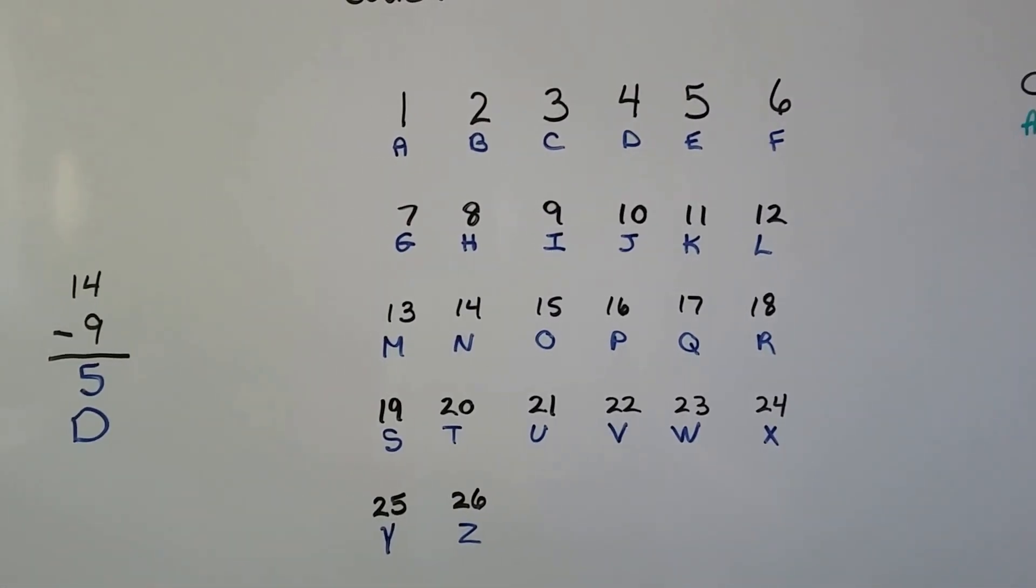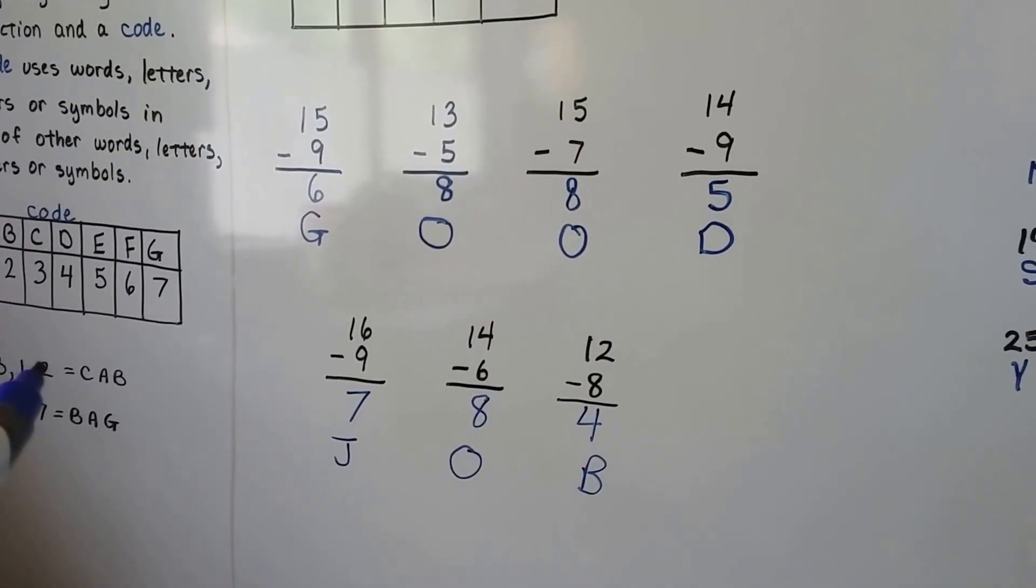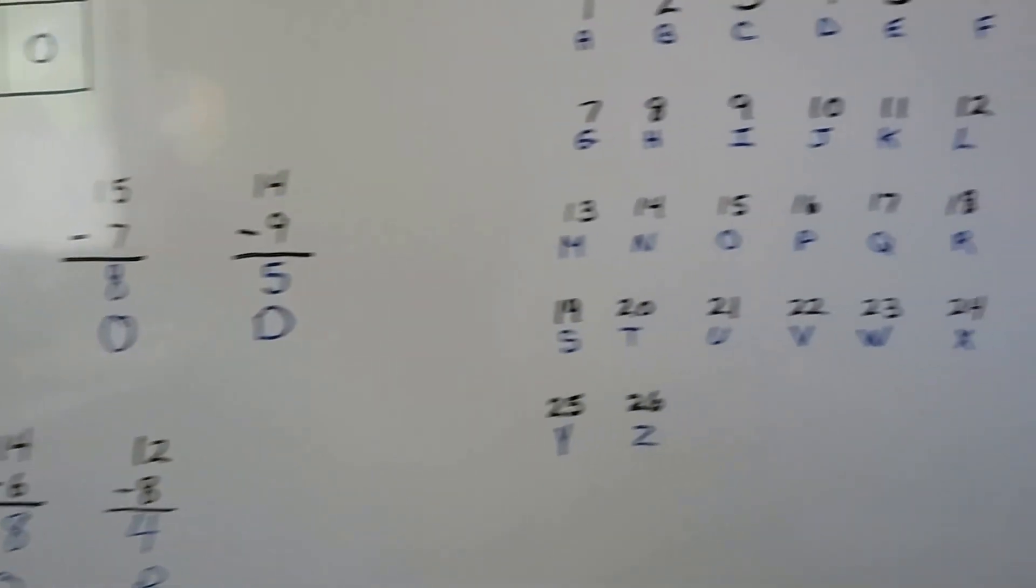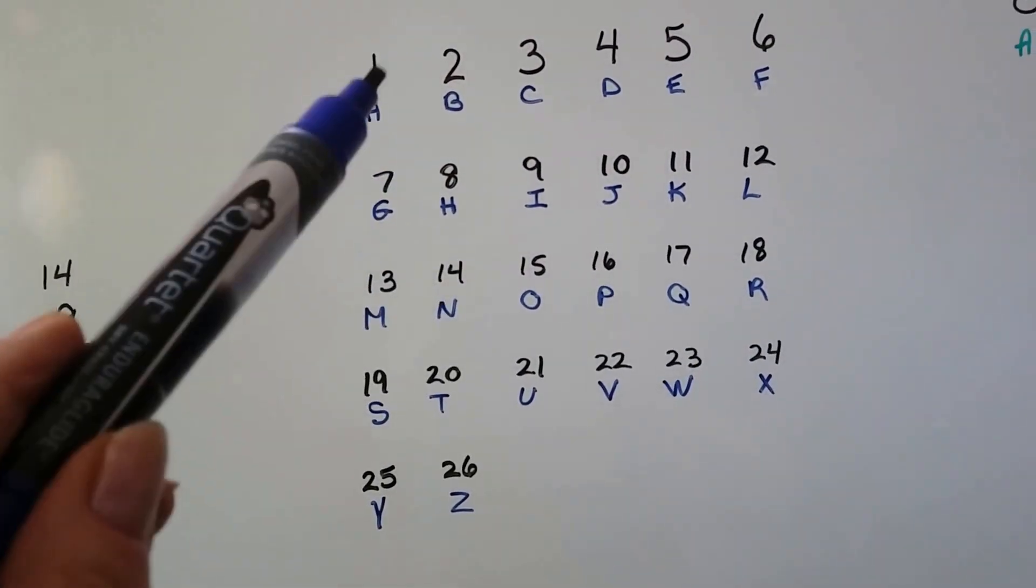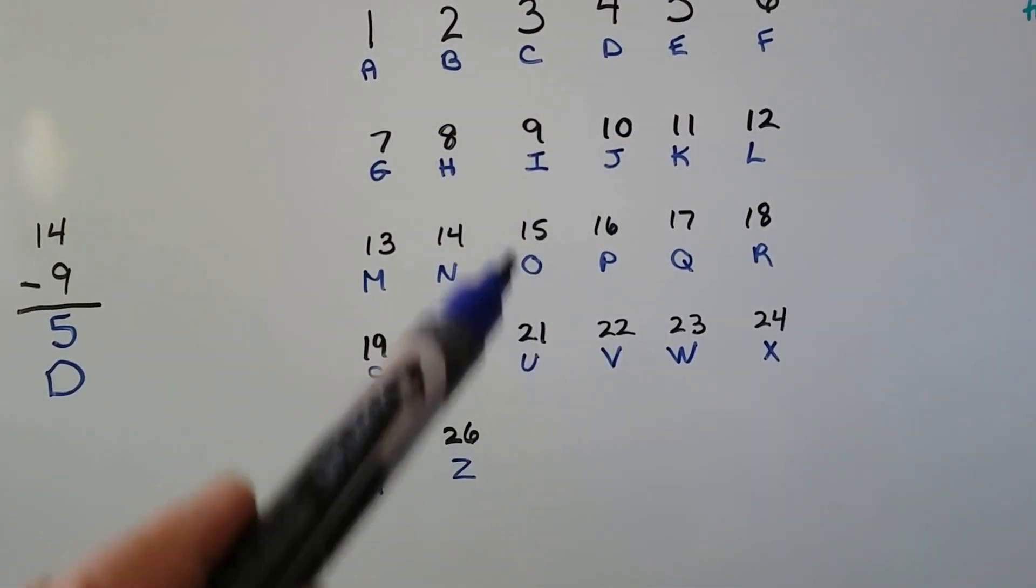Then you could write a secret code using those numbers. You could put a comma in between them so that people knew which letter you were using, sort of like I did over here where I put commas in between them. That way you won't confuse a 1 and a 5 with a 15.